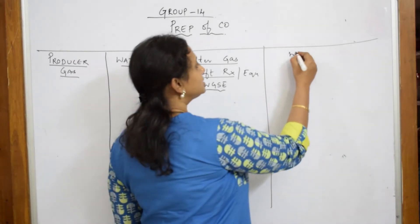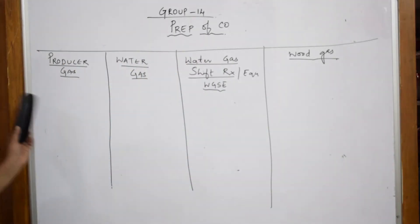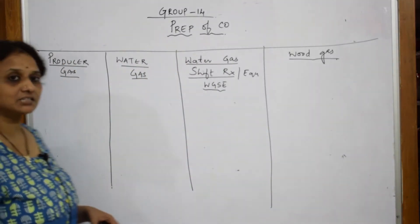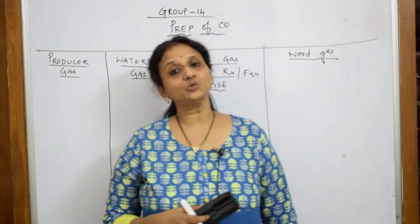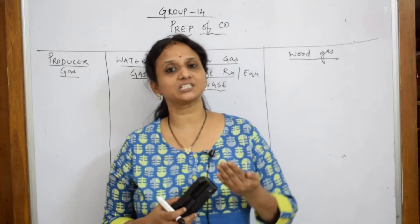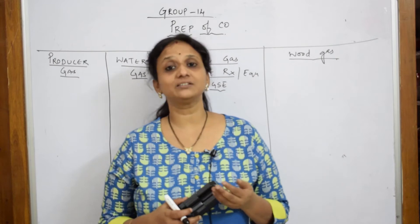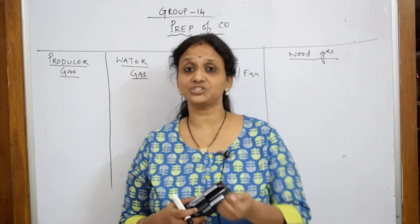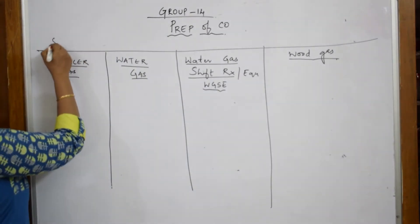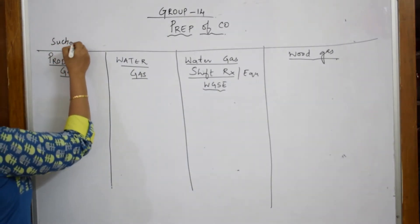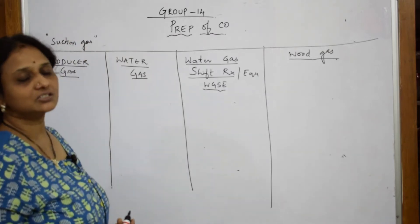Let us also learn about a gas called wood gas. So what do I mean by producer gas? Basically, this producer gas was used in the US earlier. They used to use producer gas as a fuel for the manufacturing of iron and steel. It is also called suction gas. If your teacher asks you what is suction gas, it is called producer gas.